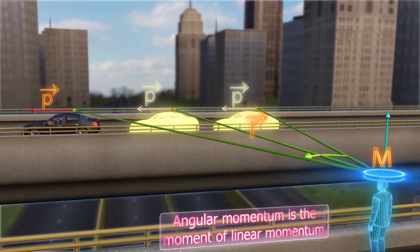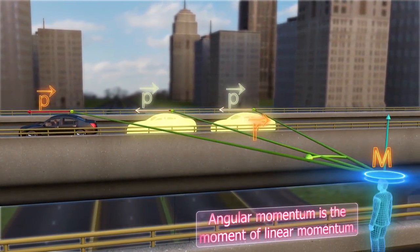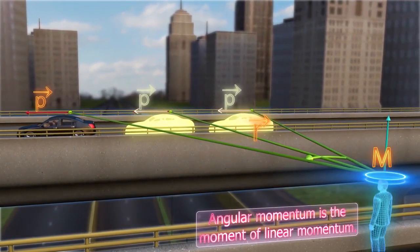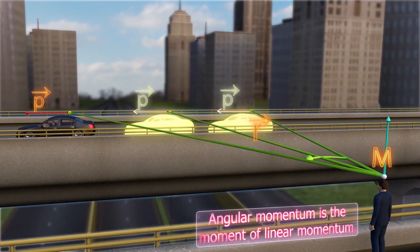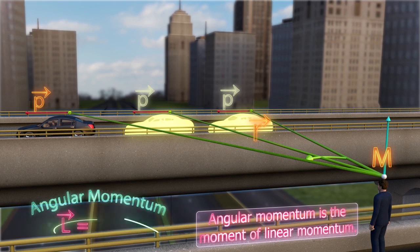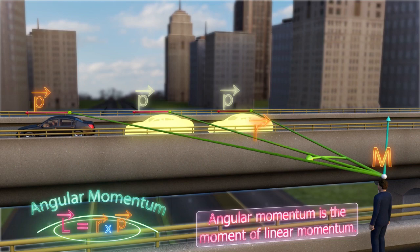For a single particle, angular momentum is the moment of linear momentum. It is mathematically equal to the cross-product of position vector R and linear momentum P.